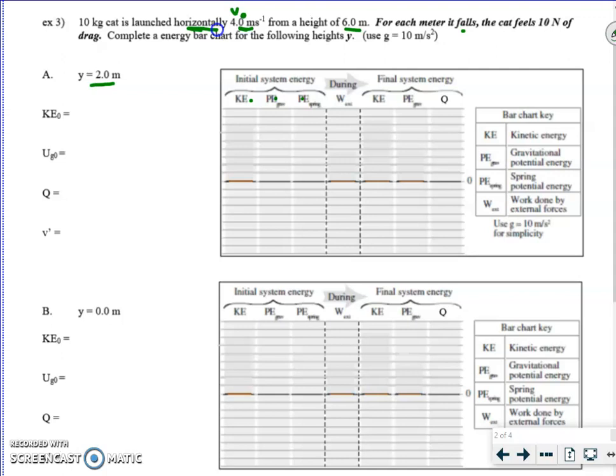So we want to look at the total energy before the event. The event is as it falls. Then we want to look at what's happening after it has fallen to a final height of 2 meters. We ask ourselves, what types of energy does it have? Well, is it moving? Yes, it's moving. So it has initial kinetic energy, and it would just be one-half MV-naught squared. That's one-half mass of 10 times 4 squared, don't forget the square of the 4, and we get 80 joules.